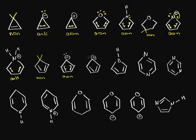This is aromatic. On this one we have all sp2 but we only have 4 pi electrons, so this is anti-aromatic. On this one we have a boron, and boron is sp2 hybridized because it only has three bonds. However, it has no lone pairs, so we only have 1, 2, 3, 4 pi electrons in the cyclic structure where they're all sp2 hybridized, so this is anti-aromatic.